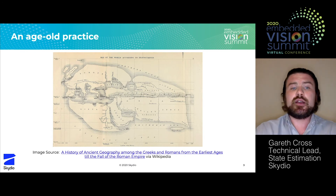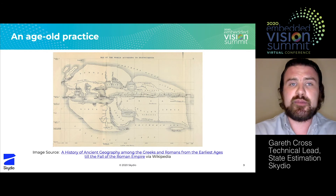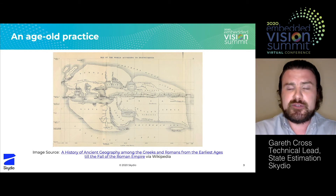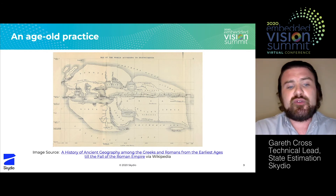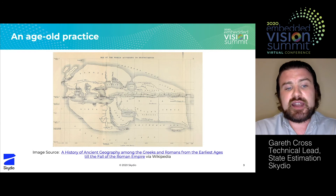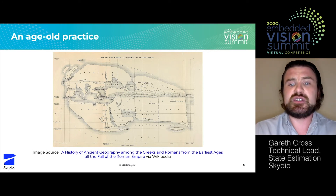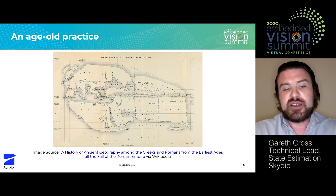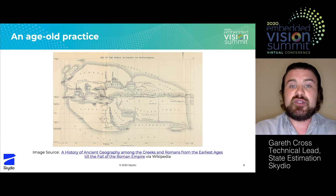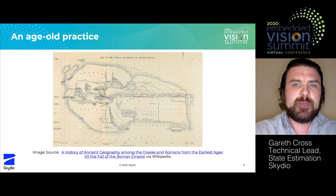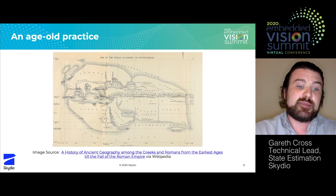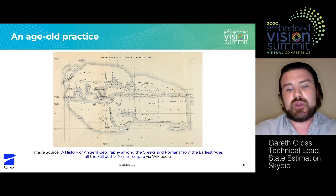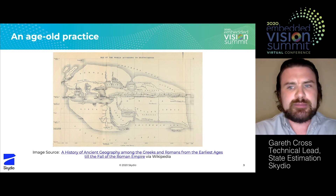I like this map here. It's an early map of the world developed by Eratosthenes. It reflects an interesting property in state estimation, which is that where more data is available, the accuracy is generally going to improve. As you might imagine, most of his data was collected around the Mediterranean, and that's where the map is the highest quality. Elsewhere, of course, it looks a lot more approximate.